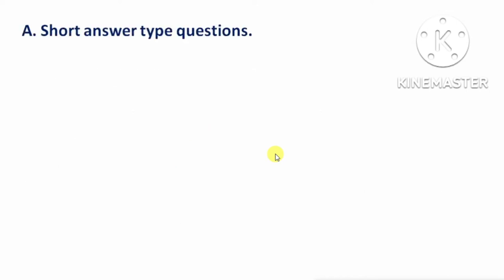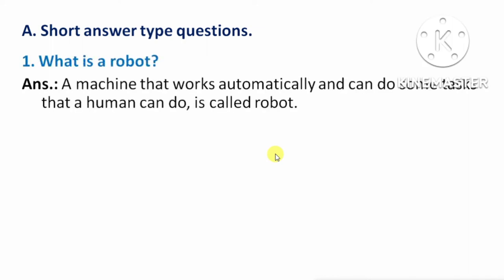Short answer type questions. First question: what is a robot? Answer: A machine that can work automatically and can do some tasks that a human can do is called a robot. Means, वह machine जो automatically कार्य कर सकती है और इंसानों के द्वारा किये जाने वाले कुछ कार्य को भी कर सकती है, उसे कहते हैं robot।